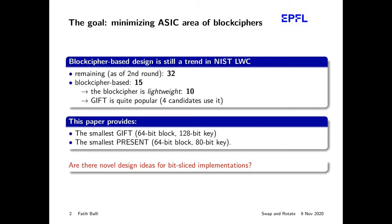It is still an active trend to take a block cipher and define a mode of operation to get an authenticated encryption primitive. Among them, GIFT is quite popular as a choice, with four of the candidates already using it. This paper provides the smallest GIFT and PRESENT implementations — more concretely the 64-bit block variants. The question is whether there are novel design ideas that will further improve the reduction in the footprint of block ciphers, and that is the answer we give in this paper.